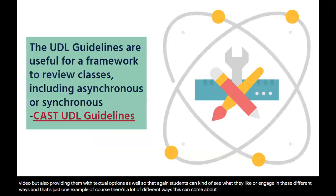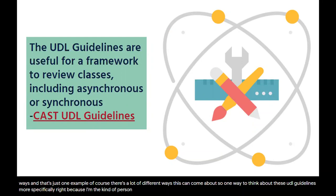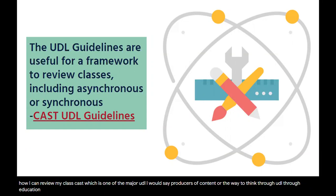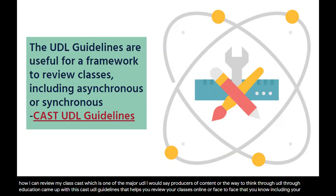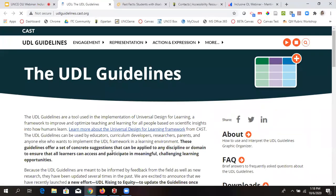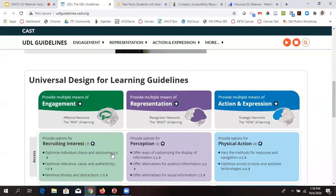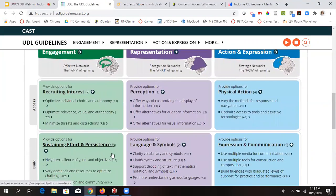The way UDL works is that within your online instruction — in design or how you teach — you're always thinking through ways to provide multiple means of representation, action and expression, and engagement. One specific example: if you like video, keep in mind that not all your students do, so provide both video and textual options so students can engage in different ways. CAST, one of the major producers of UDL content in education, developed the CAST UDL guidelines to help you review your classes — online or face-to-face, including asynchronous and synchronous design.